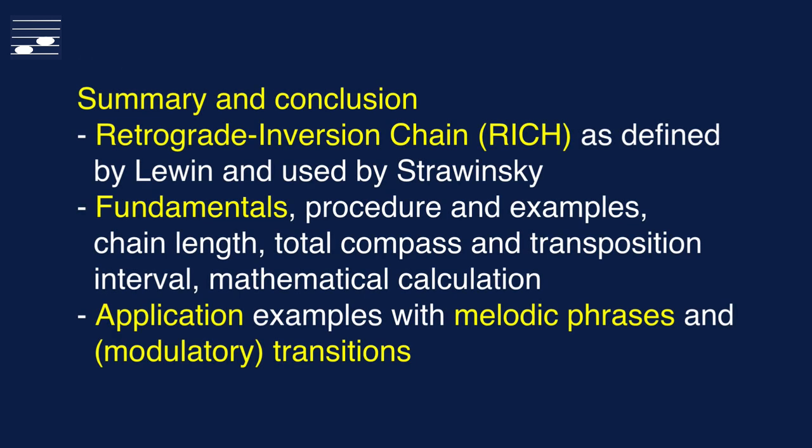Let's summarize this tutorial. The subject was the retrograde inversion chain as defined in the book by Lewin and used as a compositional process in Stravinsky's late serial music. I discussed the fundamentals of this pitch domain technique and the procedure for generating chains from a basic ordered note series. We looked at its properties such as the total chain length when appending a number of sub-phrases, the pitch compass, the transposition interval and how to calculate these properties. In the application section I demonstrated the use of the RICH transformation for creating melodies with internal coherence and symmetry. And my favorite application, the composition of modulatory transition sections.